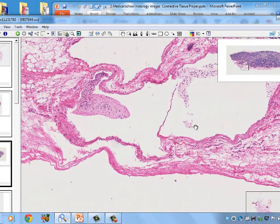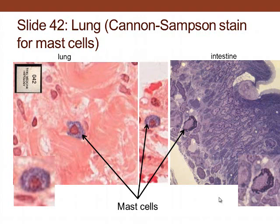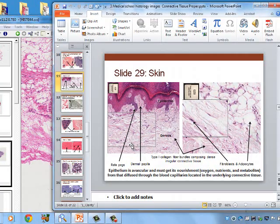Slide 42 shows lung tissue and intestine. We see a mast cell with a euchromatic, lightly staining, large nucleus — not lobulated like an eosinophil. A special stain reveals the granules, which contain histamine and heparin and are associated with itching and allergic responses.